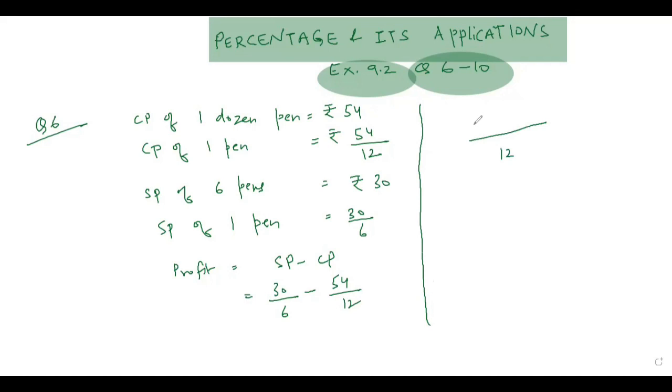So 12 into 60 minus 54, so our answer will be coming out to be as 6 by 12. Now profit percent, how would we calculate profit percent? 6 by 12 upon 54 by 12 into 100, so 6 by 12 into 12 by 54 into 100. So answer would be coming out to be as 100 by 9 or we can convert into the mixed fraction like 11 whole number 1 by 9 percent.